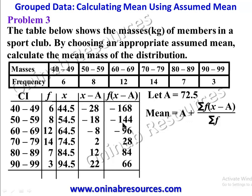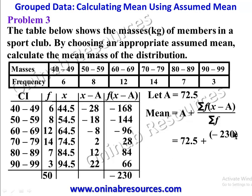The summation of f times (x minus a) is: negative 168 minus 144 minus 96 plus 28 plus 84 plus 66, giving negative 230. The summation of f is: 6 plus 8 plus 12 plus 14 plus 7 plus 3, giving 50. Substituting: 72.5 plus negative 230 divided by 50 gives 72.5 minus 4.6, which equals 67.9 as the actual mean of the distribution.